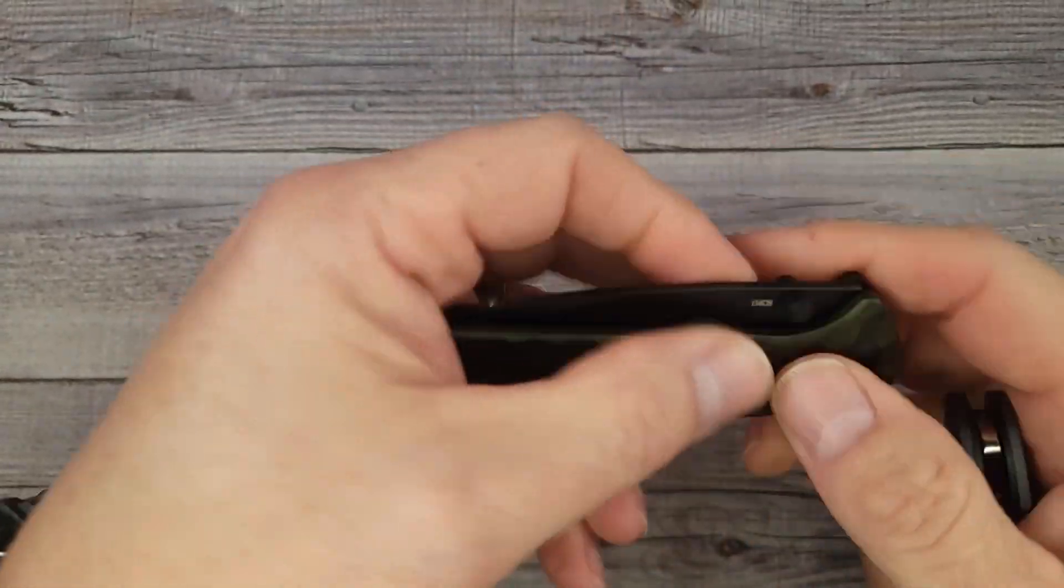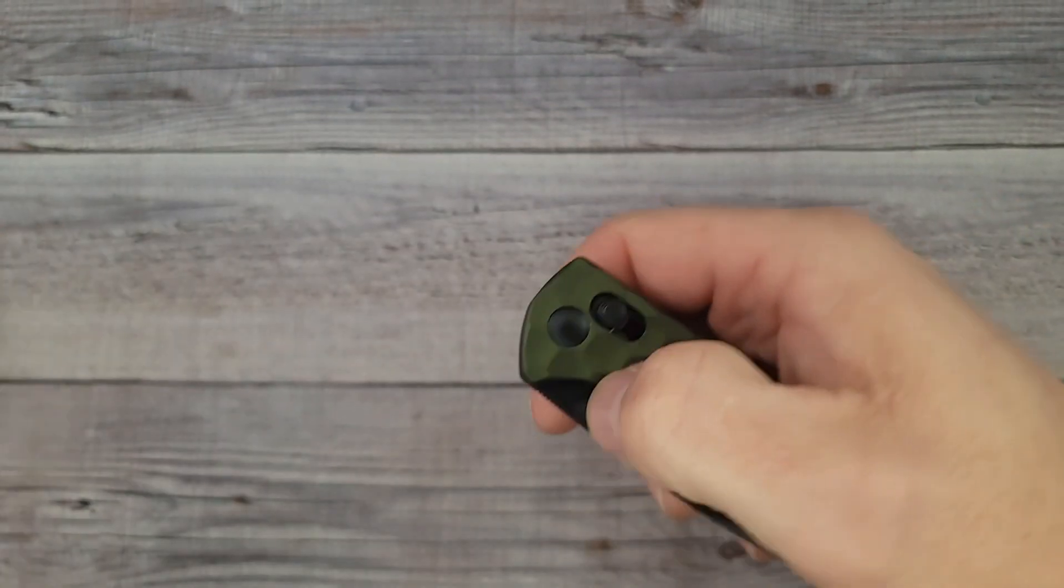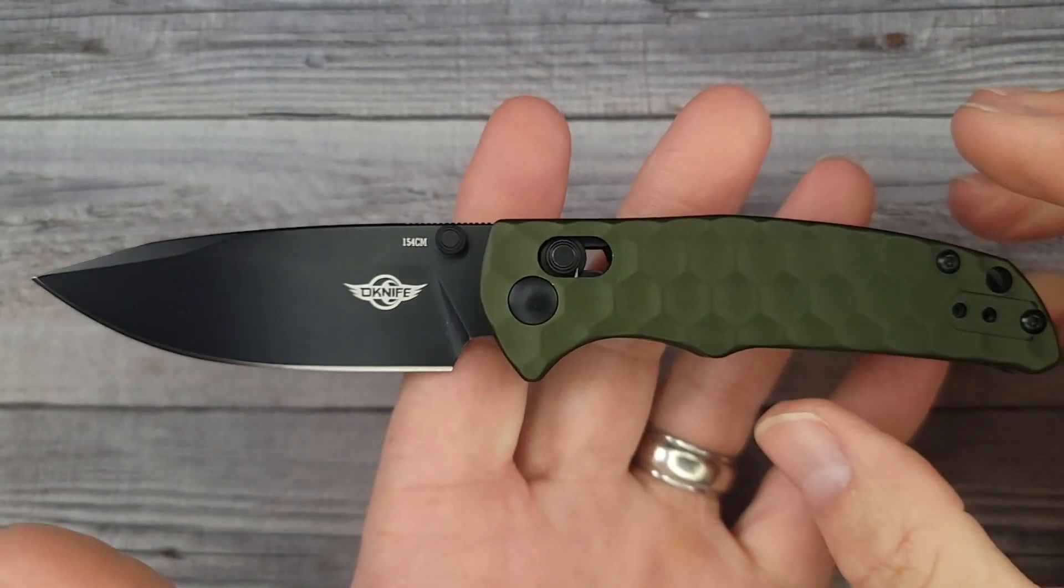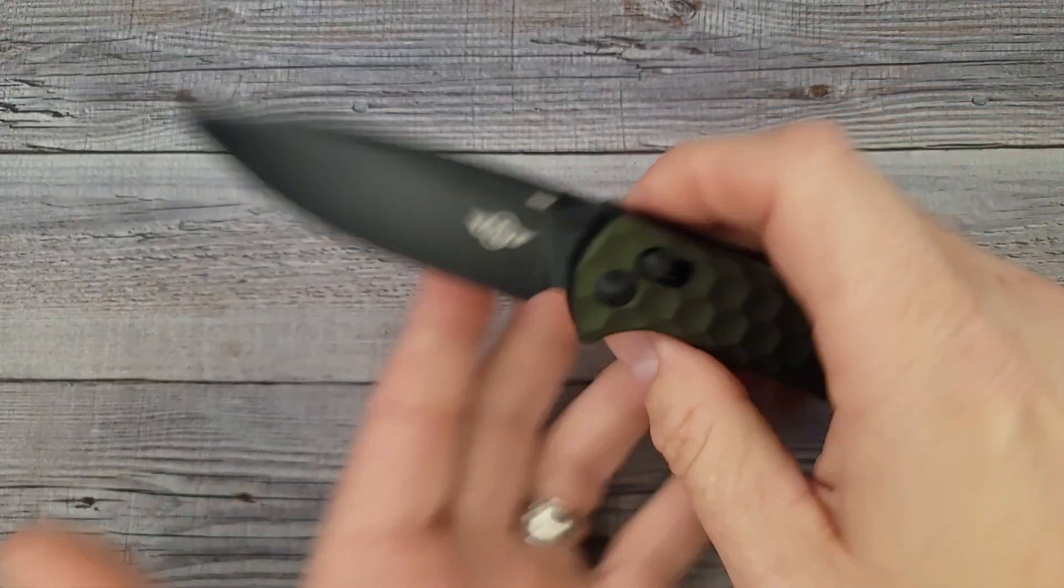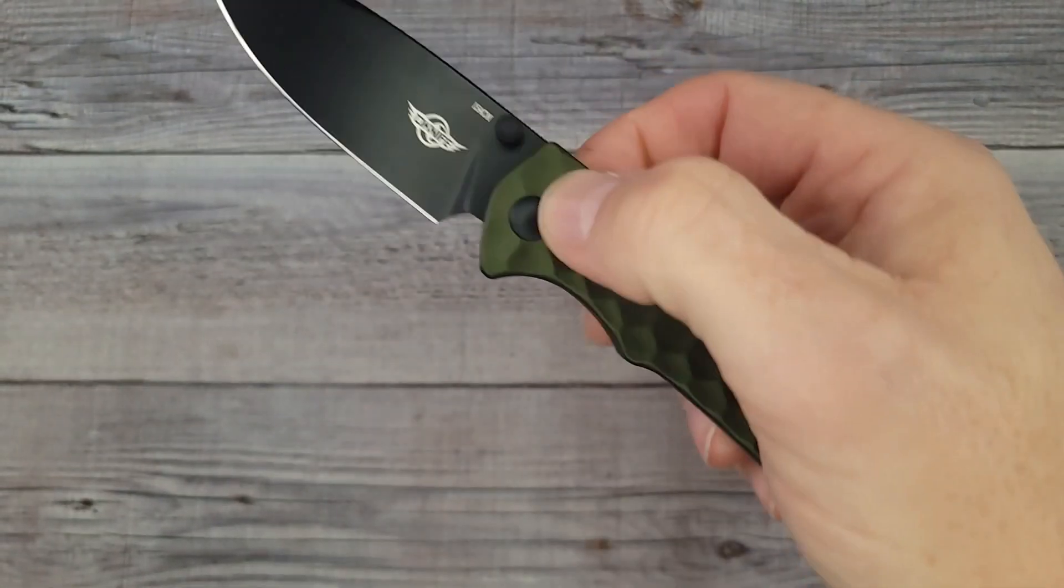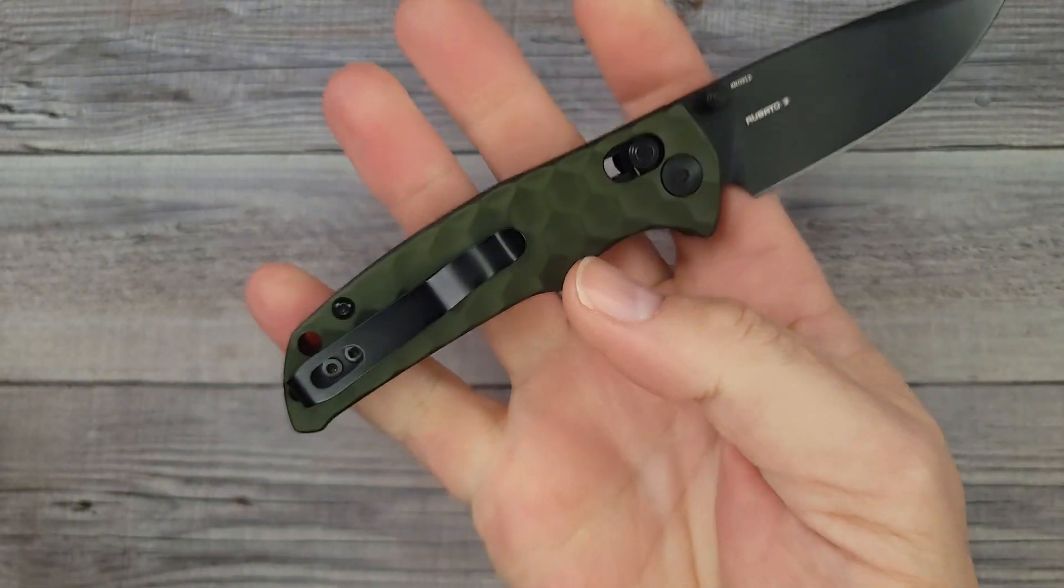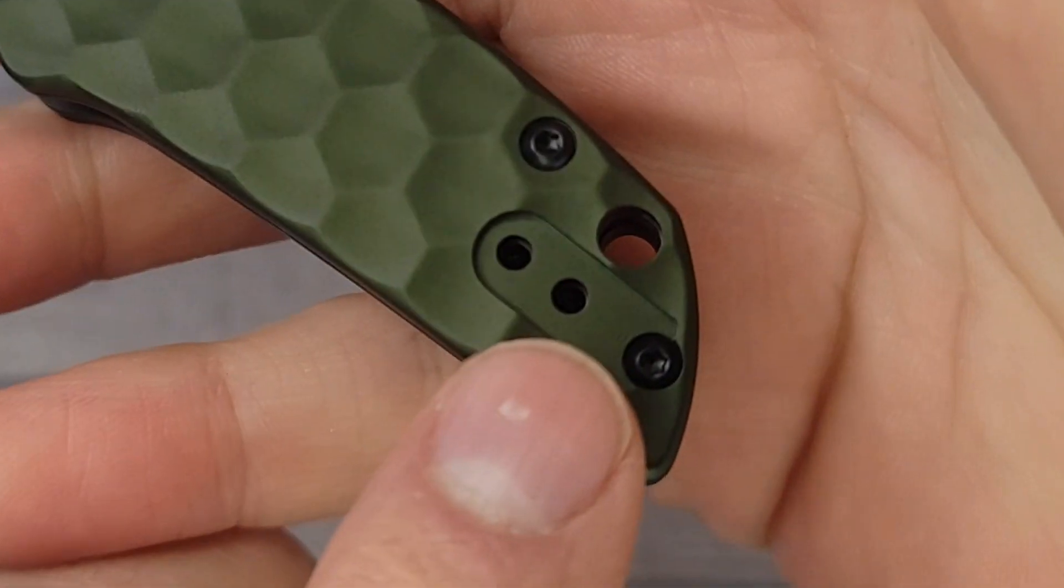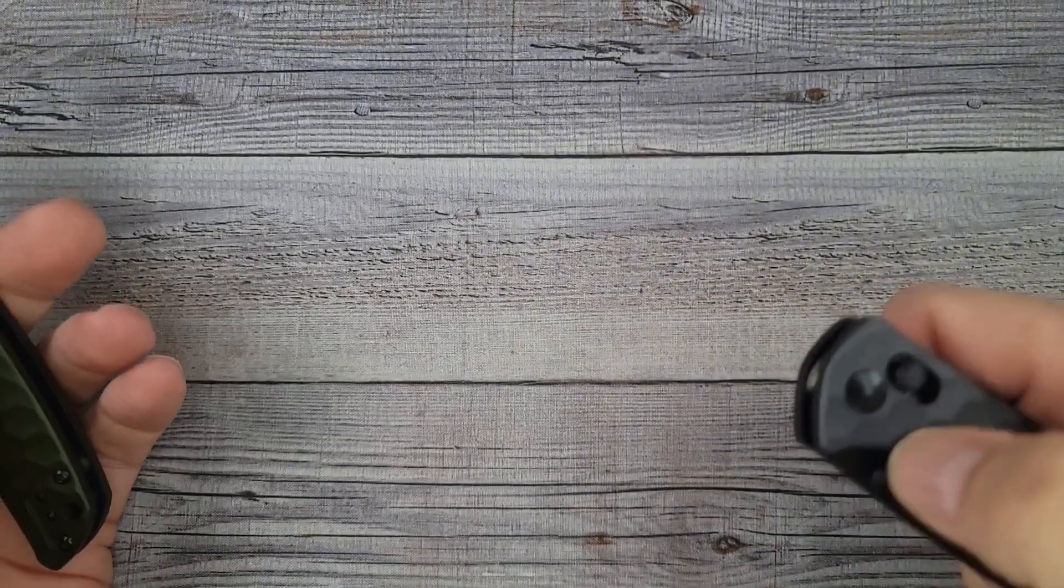Check it out - these are all knives that knife enthusiasts, if you've missed it, you should know about because these are all great knives. This is the Roboto 3, it has excellent action, 154CM blade steel, it has a reversible deep carry clip.